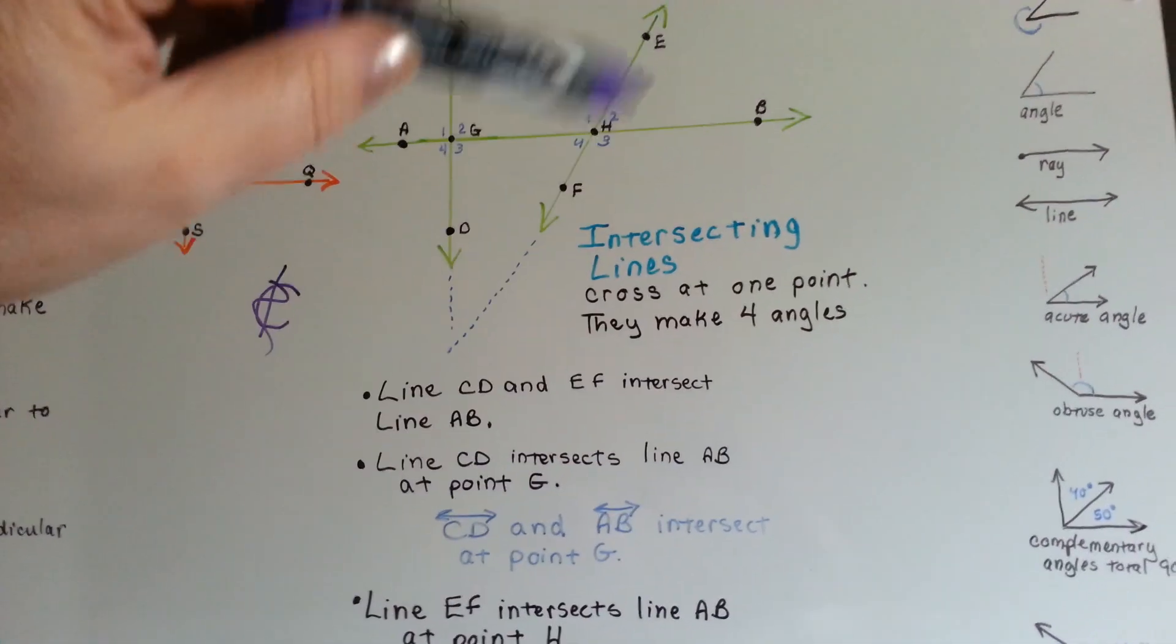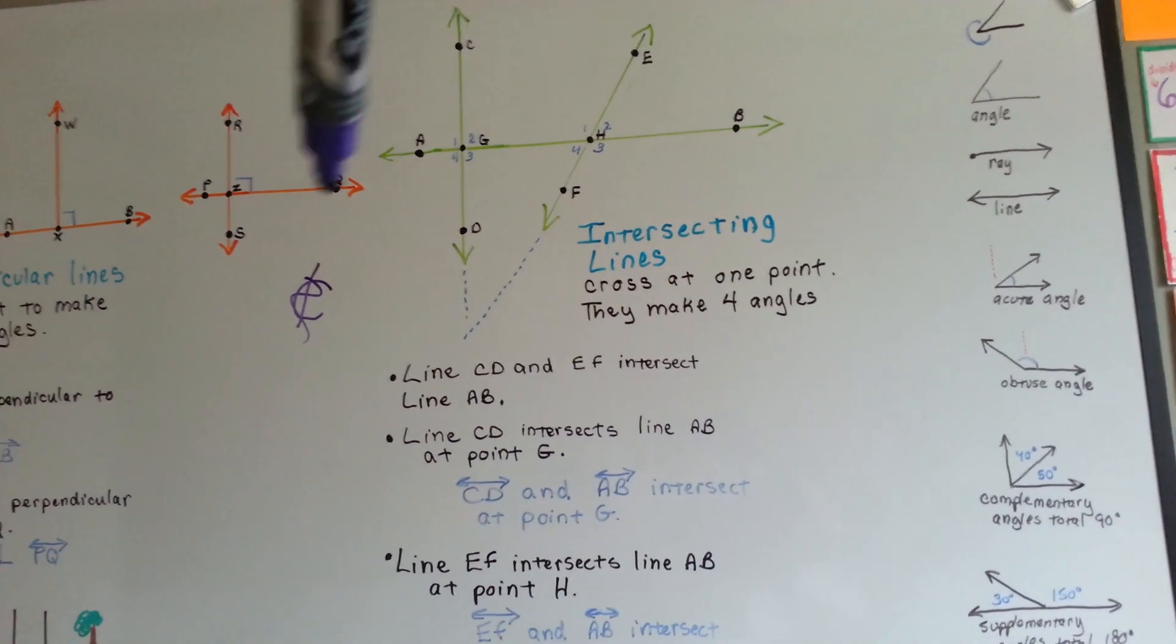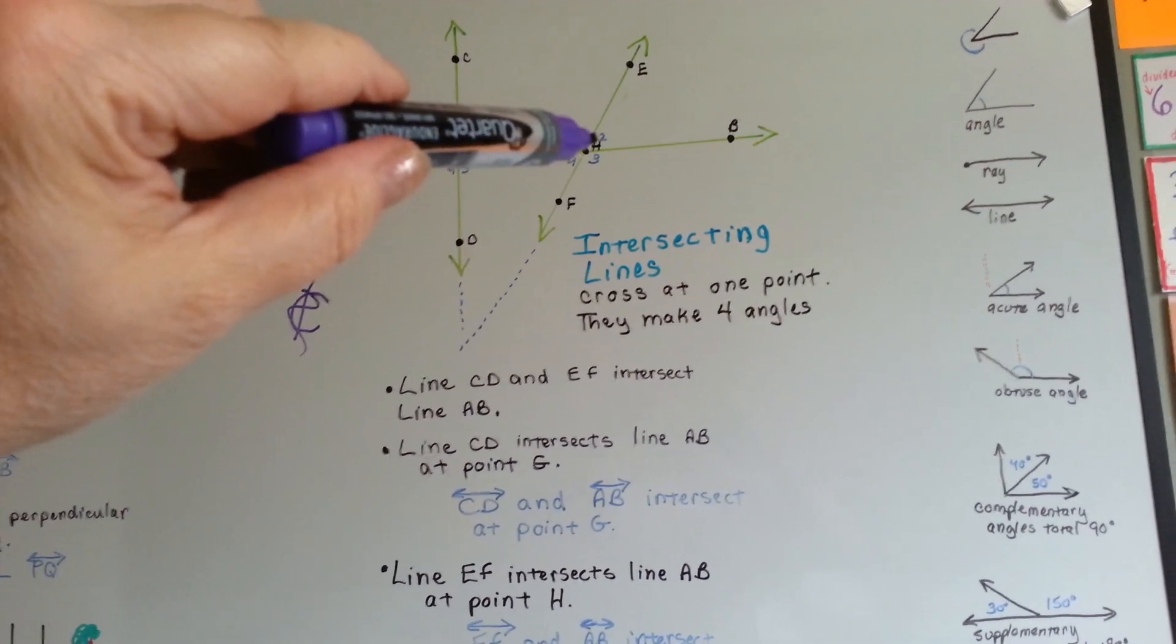Line EF, that's this one, intersects line AB, that's this one, at point H, right there. That's point H.